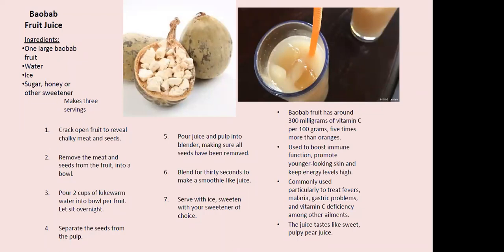Just as a small finishing note, here is the baobab fruit and how you can make juice out of it. It would require a large baobab fruit, water, ice, sugar, honey, or other sweetener. From one fruit, you can make around three servings. It's about cracking the fruit open, which reveals the chalky meat — this meat has to be removed along with the seeds and put into a bowl, which needs to be left in water overnight. Then the seeds can be separated from the pulp, and the pulp itself can be blended for around 30 seconds to make a smoothie-like juice, which is actually very tasty — it tastes almost like pear juice. One thing to note is that the baobab fruit has around 300 milligrams of vitamin C, which is five times more than oranges. It is used to boost immune function, promote younger-looking skin, and keep energy levels high.